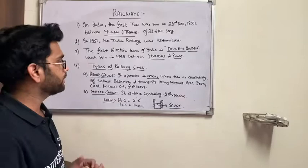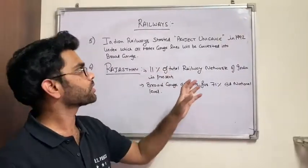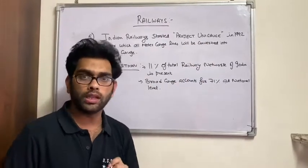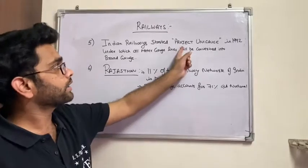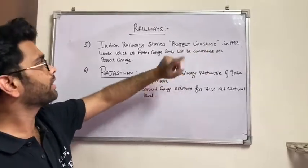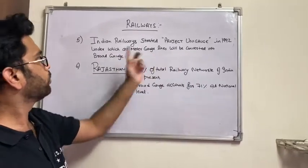So later on, government started one initiative that is known as Project Uni Gauge in the year 1992. This is one of the important initiatives because under this Project Uni Gauge, uni means single gauge. That means the government has decided to convert all the meter gauge into the broad gauge.